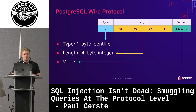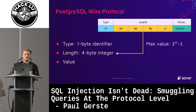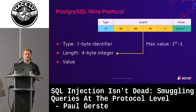Let's go into Postgres. Looking more closely at the message structure: we have a one-byte type, a four-byte integer length, and our value. That four-byte length field has a limitation — four bytes can only represent a maximum number. So what might happen if we try to send a query larger than what can fit in there?